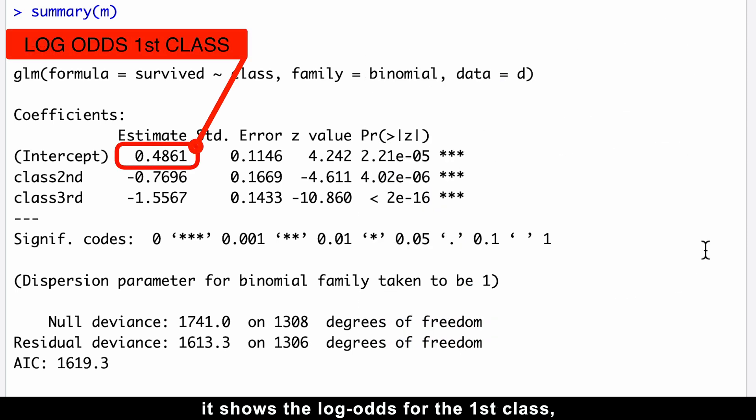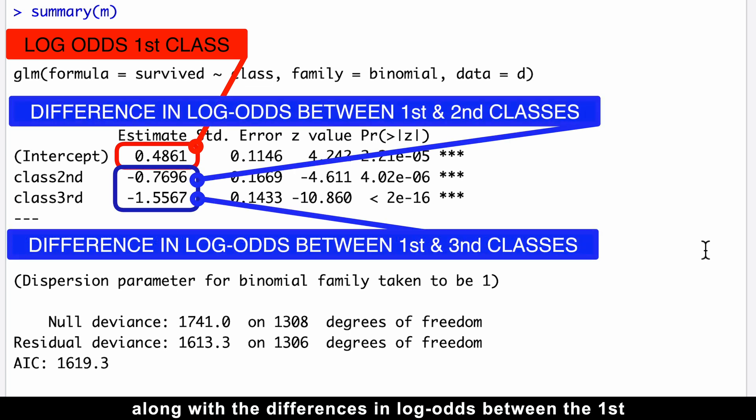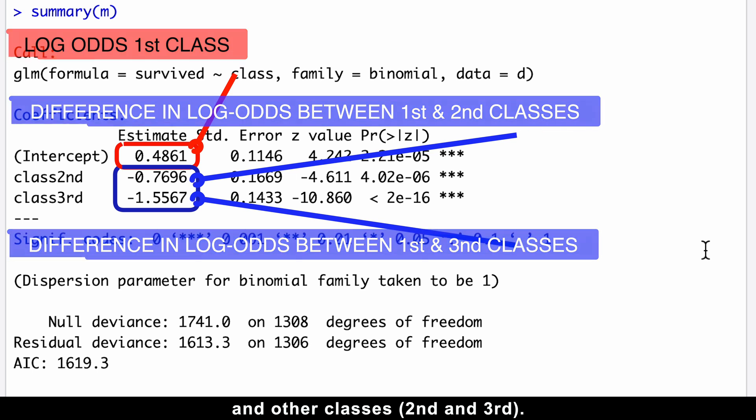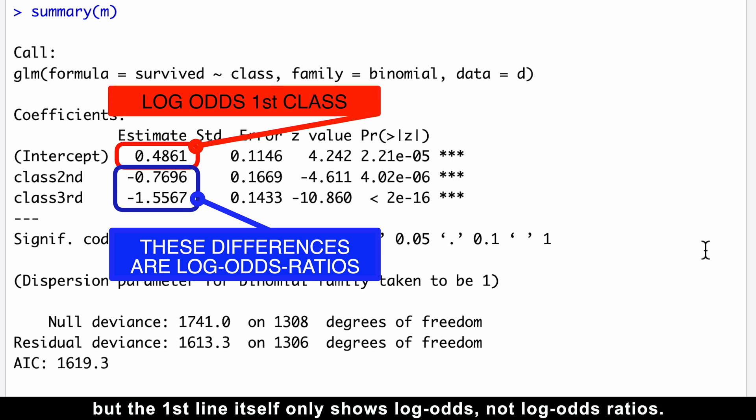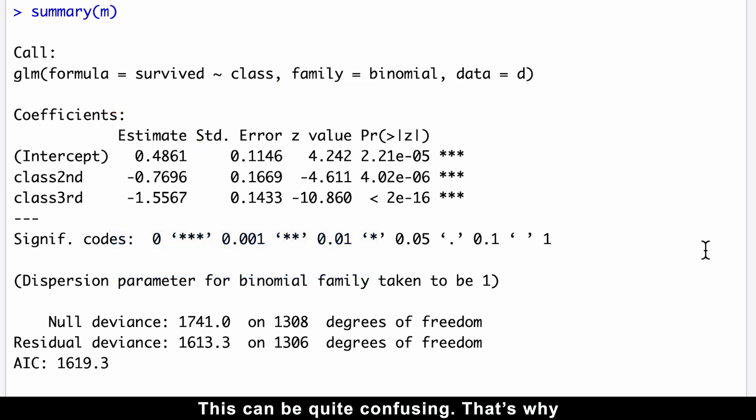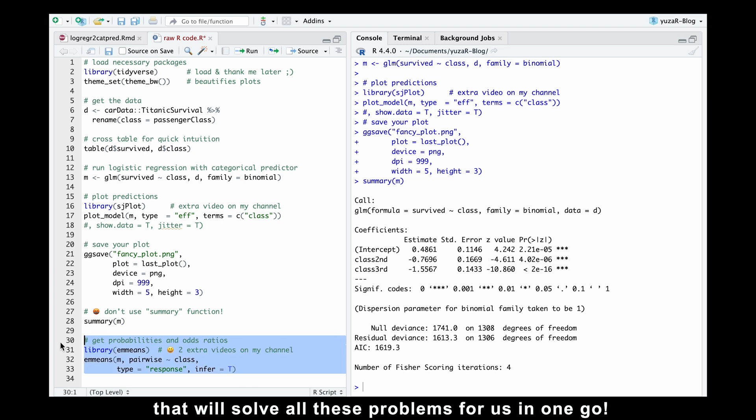Along with the differences in log odds between the first and the other classes, second and third. These differences are technically log odds ratios, but the first line itself only shows log odds, not log odds ratios. This can be quite confusing. That's why we'll introduce a fantastic function that will solve all these problems for us in one go.